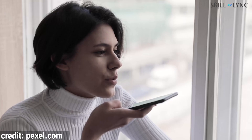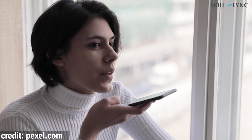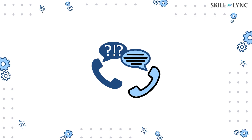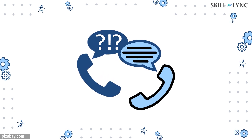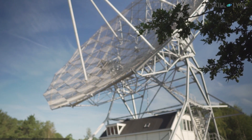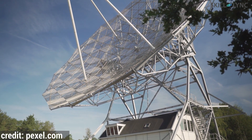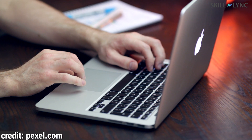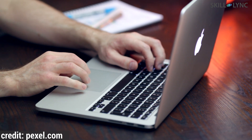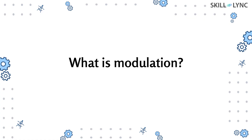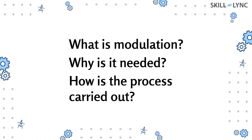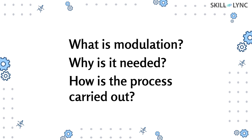Hey guys, welcome to Skill Link. Have you ever thought about how your message gets transferred over long distances? Today you can easily call a person sitting miles away and share your thoughts by just dialing a number. With advances in the communication network, a process called modulation helps us transfer information over these long distances with ease. Today we'll be talking about what is modulation, why is it needed, and how is the process of modulation carried out.